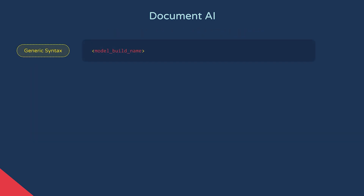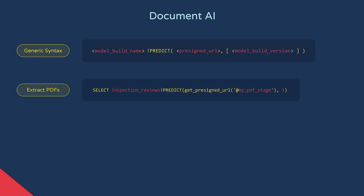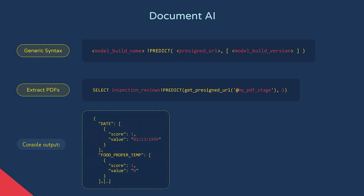We provide the model build name, the exclamation point predict syntax, then a signed URL of the stage object which stores our PDFs — we'll cover this file function in greater detail later in the course — and then an optional model build version. Here's example code showing how you can call a model build called inspection_reviews on PDFs stored in an internal named stage. This predict function will return a JSON document detailing the confidence scores and the values extracted, which you can then further process.